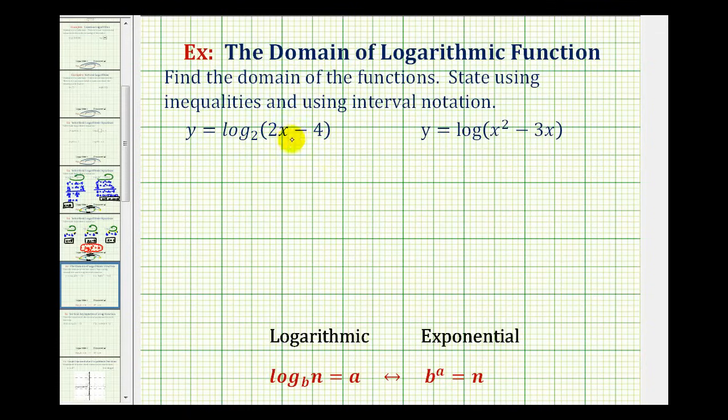The quantity two x minus four is the number part of the log that's obtained by raising two to the power of y. Remember, in exponential form, two is the base, y is the exponent, and the number would be the quantity two x minus four.